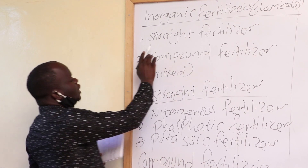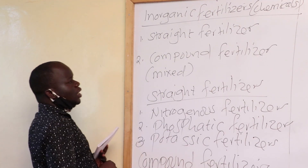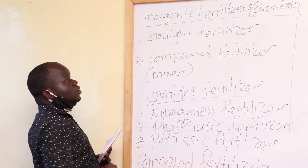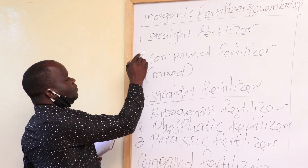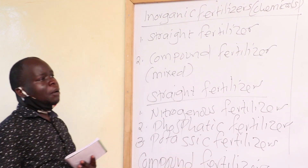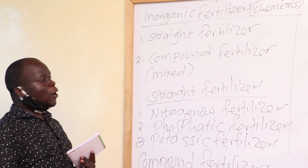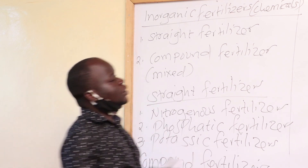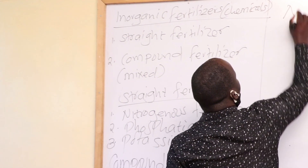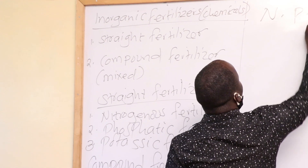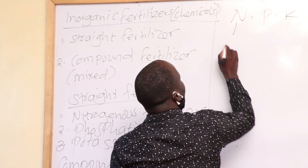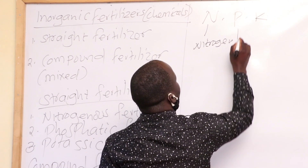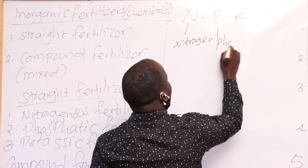We have straight fertilizers and compound fertilizers. We name them into that category based on the macronutrients they possess. When we talk about macronutrients, we are basing on NPK — nitrogen, phosphorus, and potassium.